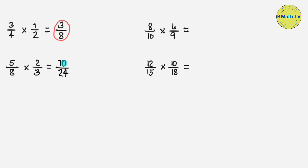But the numerator and the denominator are both even numbers, so we can still reduce this fraction to lowest term. We need to get the GCF of 10 and 24 and divide them by their GCF to reduce the fraction to lowest term. To get the GCF, you can use either the listing method, prime factorization, or continuous division. In this problem, we will use continuous division to find the GCF of 10 and 24.